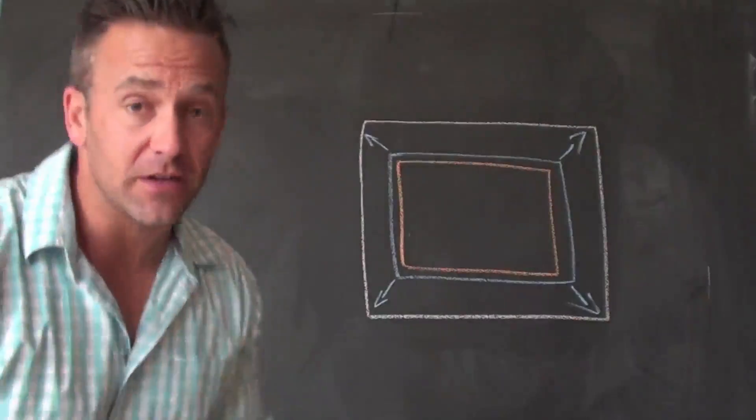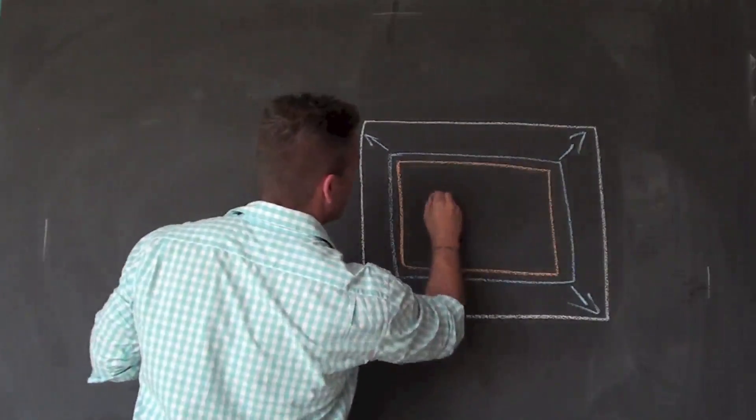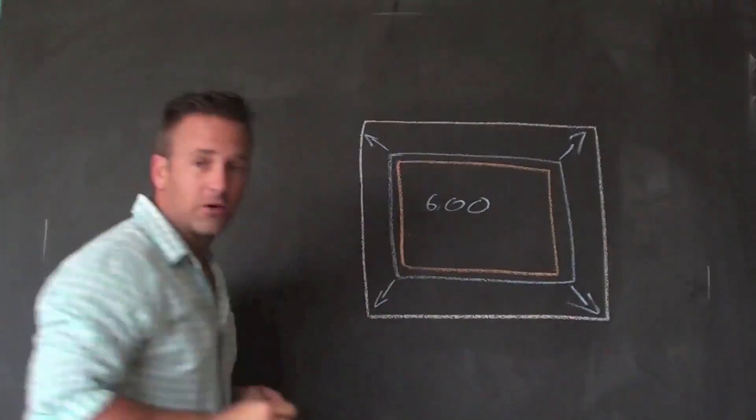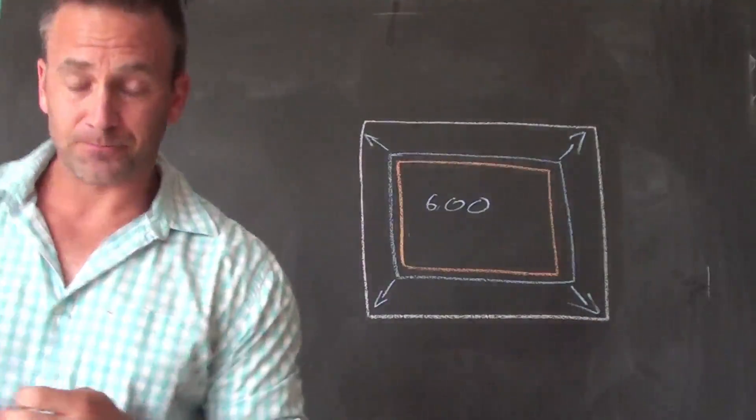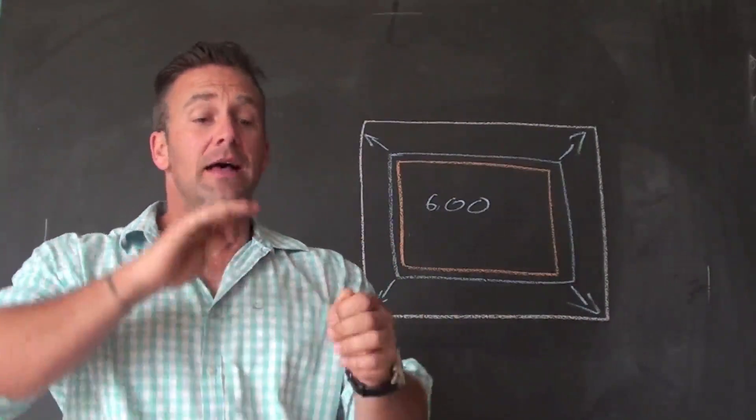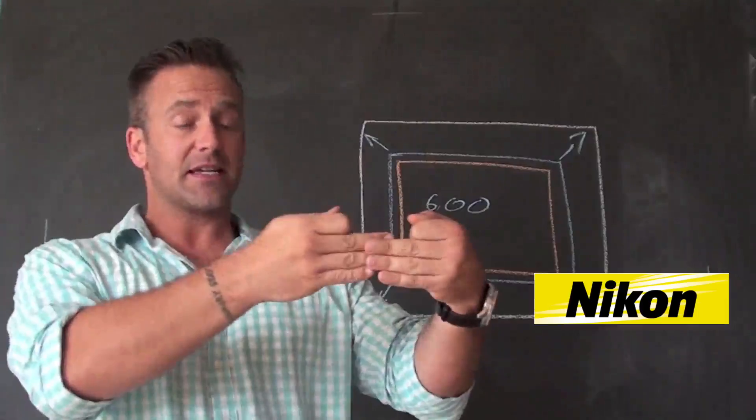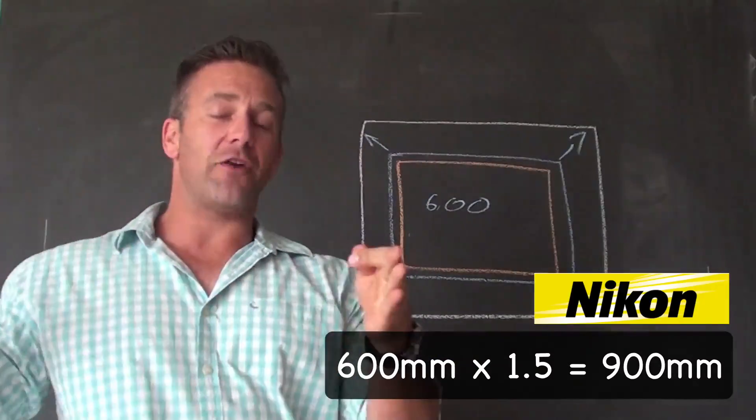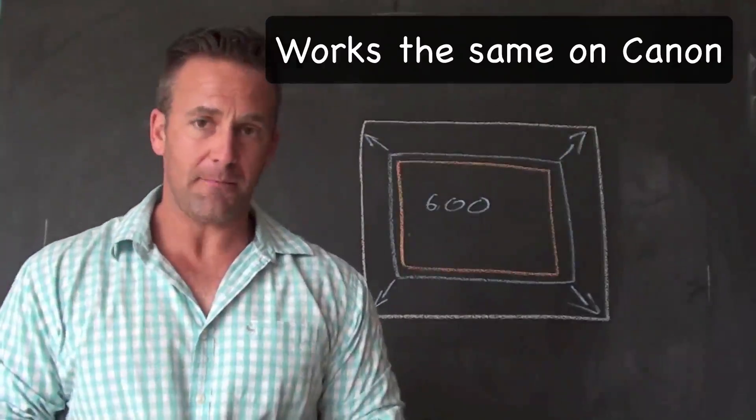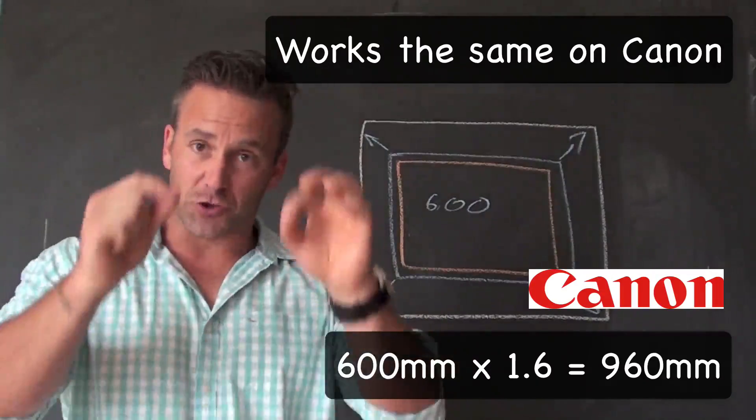Make sense? If you're shooting, for example, if you're shooting on a 600mm lens, you have a crop sensor camera on a Nikon that becomes 600 times 1.5 gives you a 900mm reach. It's all fake, but it does work. I've tried this.